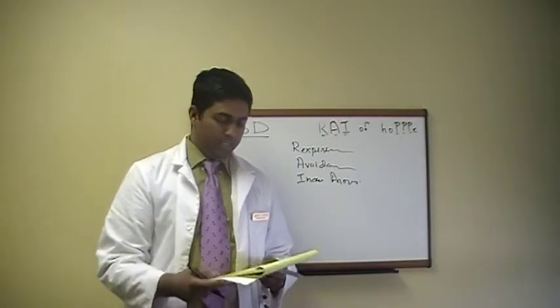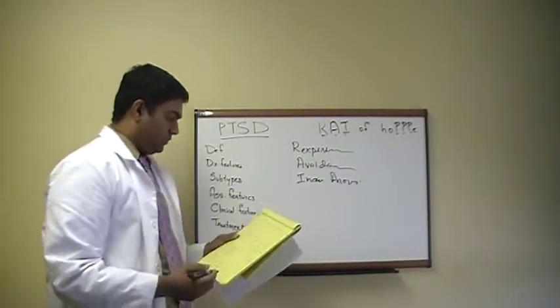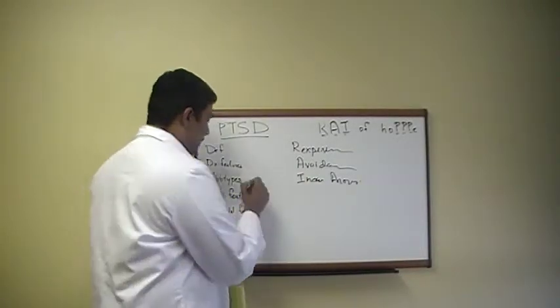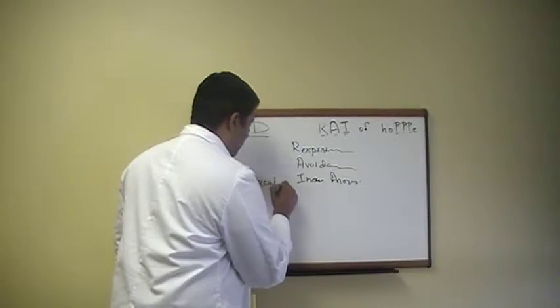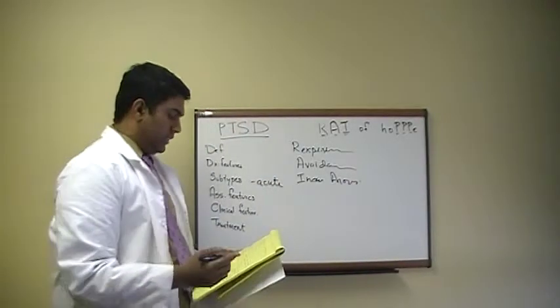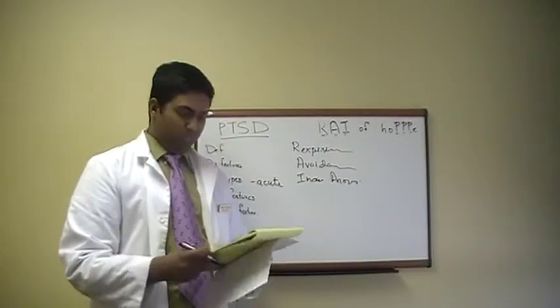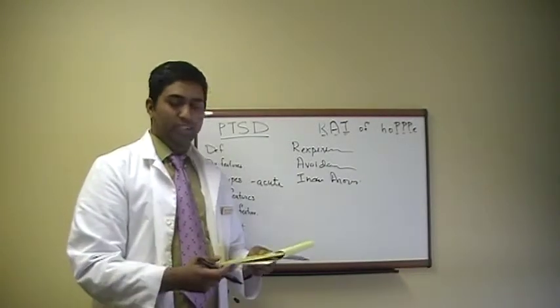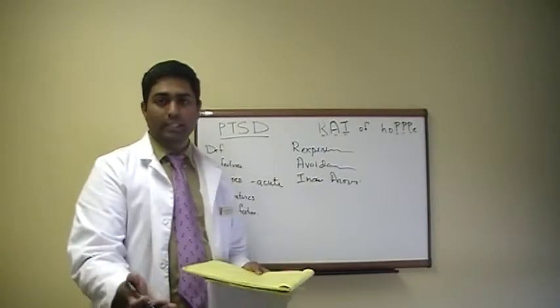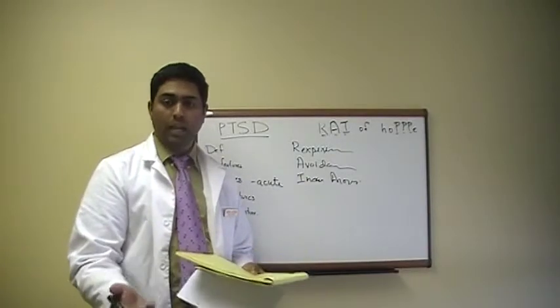There are three subtypes for PTSD. There's acute, which should last less than three months. There's chronic and delayed, where the symptoms begin at least six months following the traumatic event. And like I said before, if it is less than one month, it's not PTSD, it's acute stress disorder.